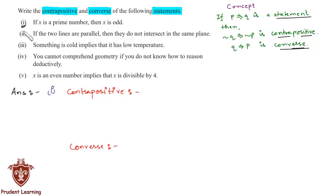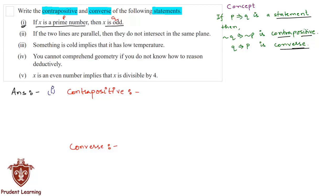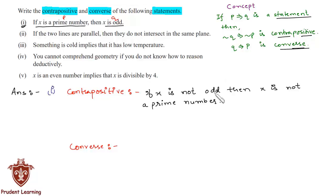The first statement is: if x is a prime number, then x is odd. The first part can be taken as p and 'x is odd' as q. The contrapositive would be: if x is not odd, then x is not a prime number.